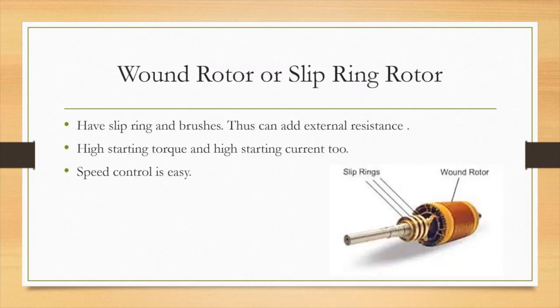Next we will see a wound rotor or slip ring rotor. Here we have slip ring and brushes. This is the difference from the squirrel cage rotor. We can add external resistance because of that high starting torque and high starting current also. And here speed control is very easy.